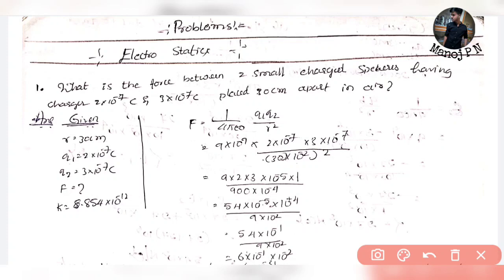Step by step: first extract the given data. We have two charged balls — Q1 and Q2. Q1 = 2×10⁻⁷ C, Q2 = 3×10⁻⁷ C, separated by 30 cm. This is the radius — 30 cm. The medium constant value is 8.854×10⁻¹² , which is why we are mentioning it.